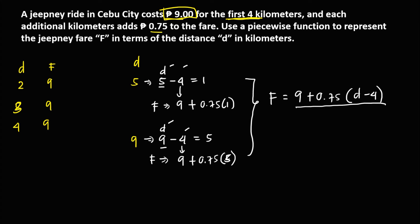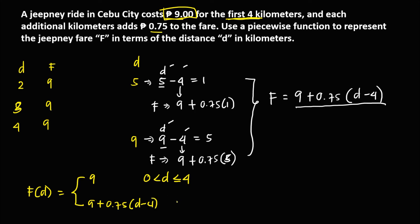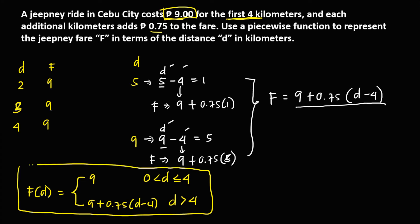This is the formula when the distance is greater than 4. To represent this as a piecewise function: the fare F in terms of distance D equals 9 pesos if the distance is greater than 0 but less than or equal to 4, and equals 9 plus 0.75 times (D minus 4) if the distance is greater than 4. This is the piecewise function.